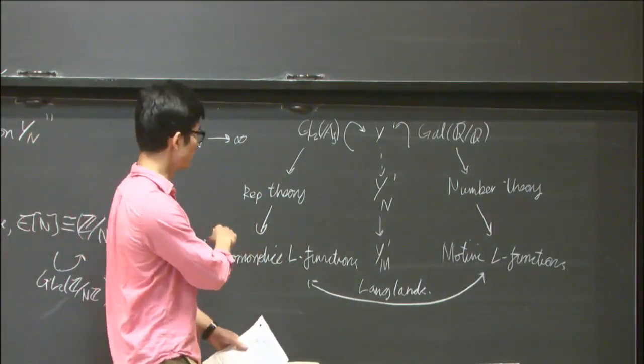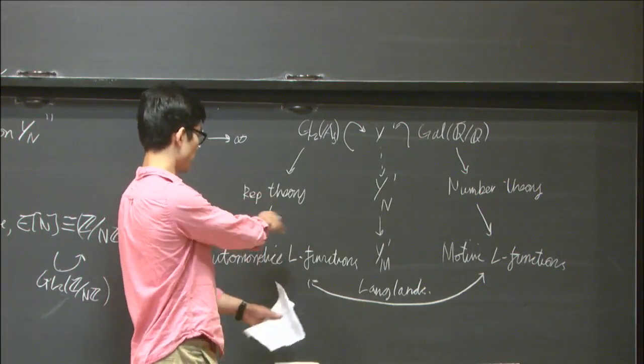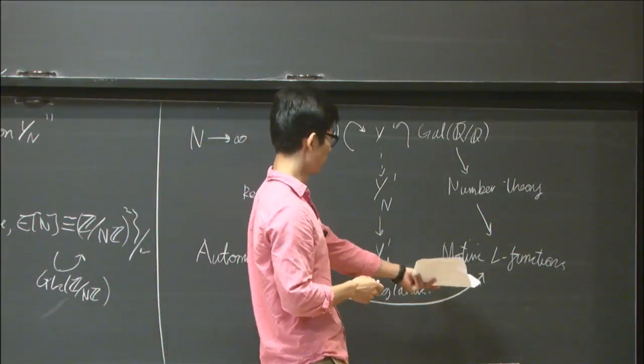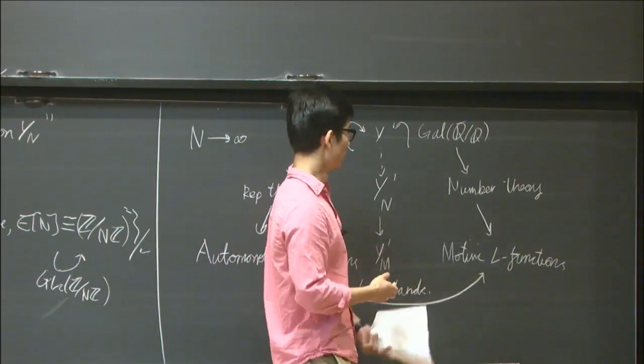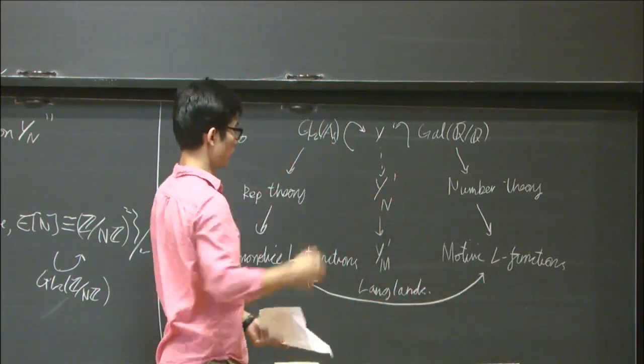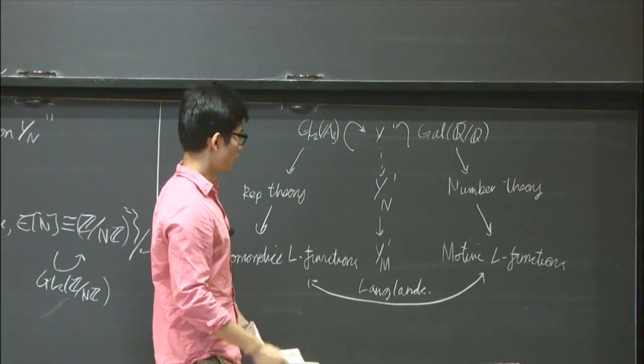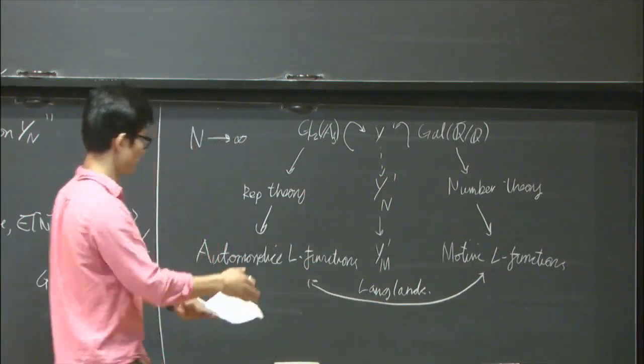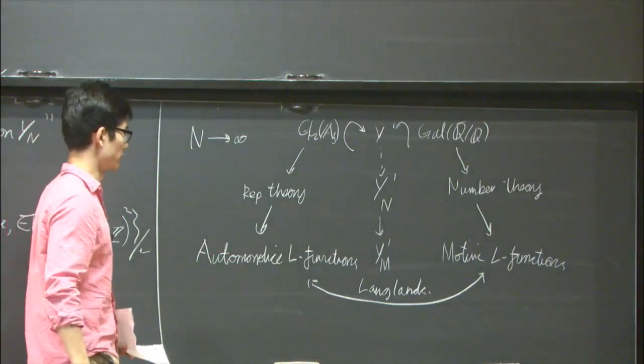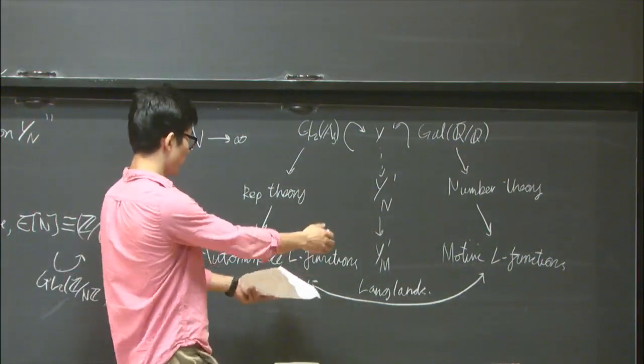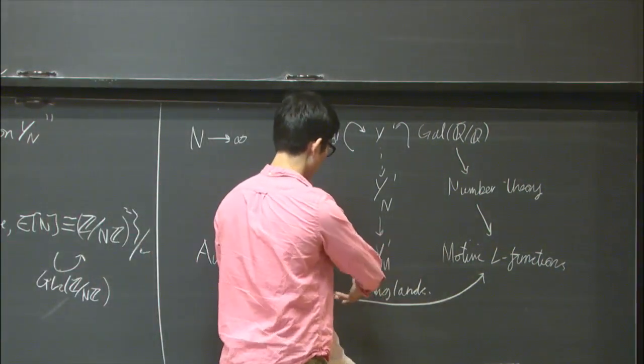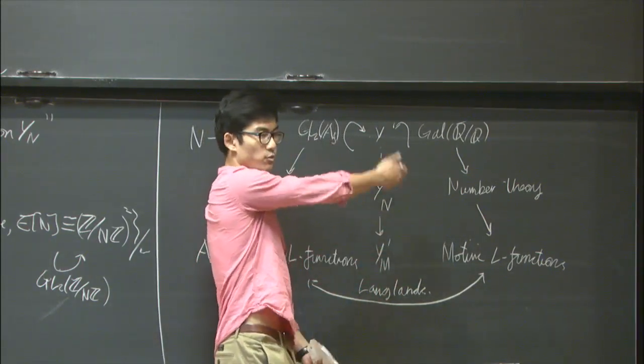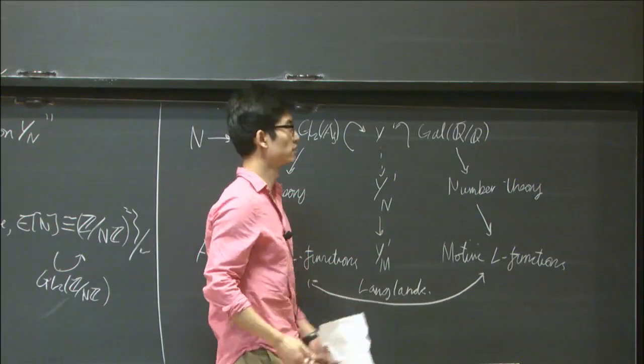This is how Deligne originally proved this conjecture for Ramanujan. He showed that the L function associated to this cusp form was actually a motivic L function which occurred in the cohomology of these modular curves. Moreover, they lied in the range of application of the Weil conjectures. This is a very powerful technique. The only way you can try and build this correspondence using this diagram is to study the geometry of these spaces, which in general will be Shimura varieties.